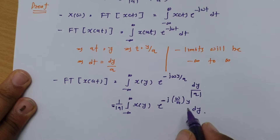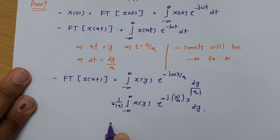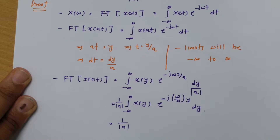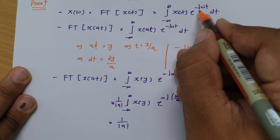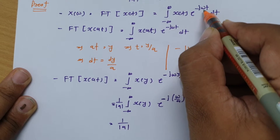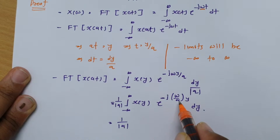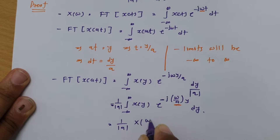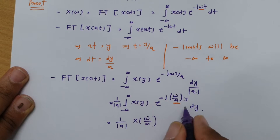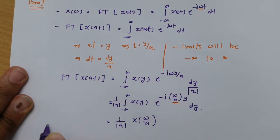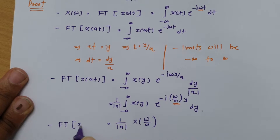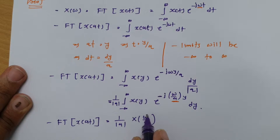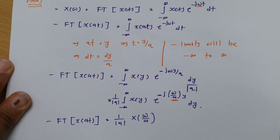Observing this expression, the constant factor is 1/|a|, and the frequency component is ω/a instead of ω. This integral is exactly X(ω/a). So we have proved that the Fourier transform of the time-scaled signal x(at) equals (1/|a|) · X(ω/a). This completes the proof of the time scaling property.